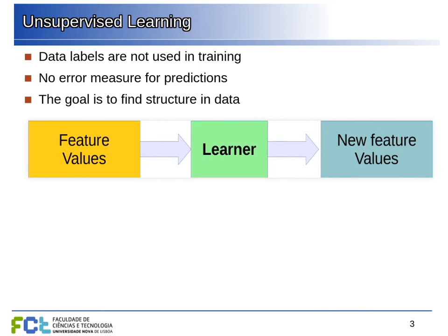The idea of unsupervised learning is that we are not using labels or target values in training, so we don't have an error measure to supervise the learner. Our goal is to find structure in data — our learner will create new feature values useful to understand the data, for example cluster labels or different representations of the data.